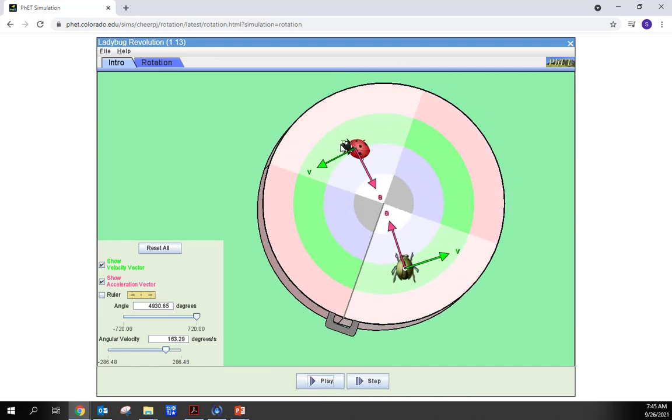And the velocity points perpendicular to the radius or tangent to the circle in the direction of the rotation. So, since the turntable is rotating counterclockwise, the ladybug's velocity points this way and the green beetle's points that way. For both ladybug and green beetle, the acceleration points inward toward the center of the circle.